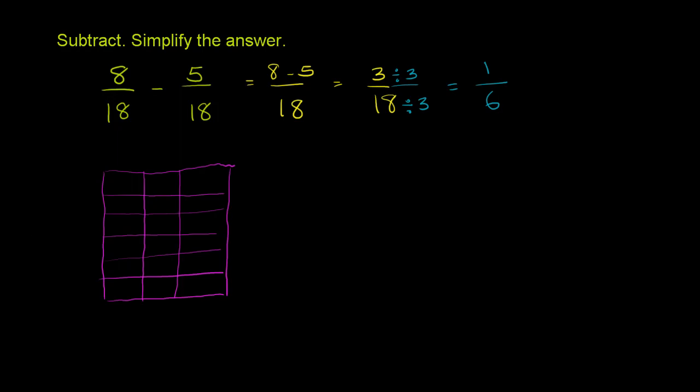Now 8 over 18 is equal to 1, 2, 3, 4, 5, 6, 7, 8. That's 8 over 18.